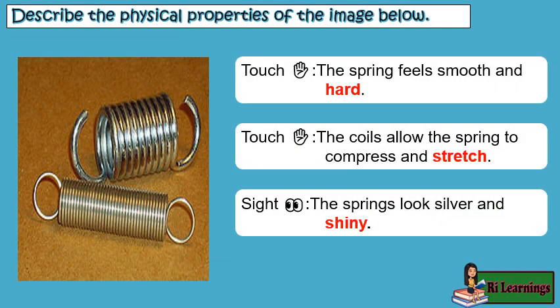Describe the physical properties of the image below. Touch: the spring feels smooth and hard. The coils allow the spring to compress and stretch. Sight: the springs look silver and shiny.